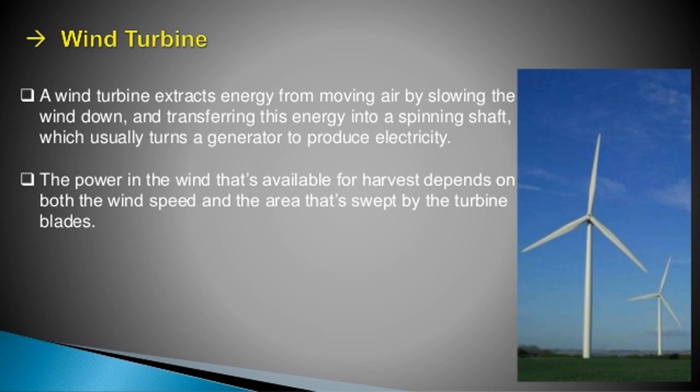Wind turbines extract energy from moving air by slowing the wind down and transferring this energy into a spinning shaft which usually turns a generator to produce electricity. The power in the wind that's available for harvest depends on both the wind speed and the area that's swept by the turbine blades.